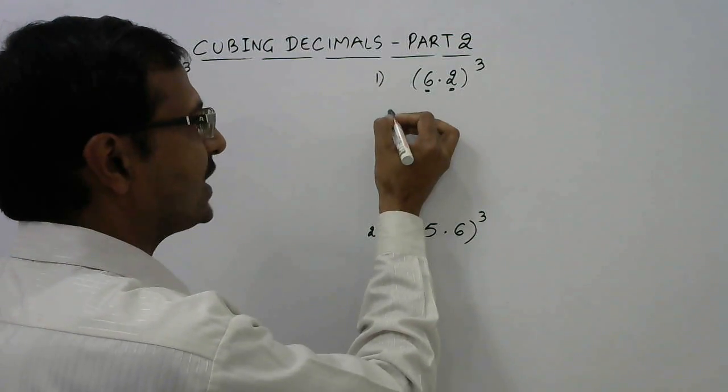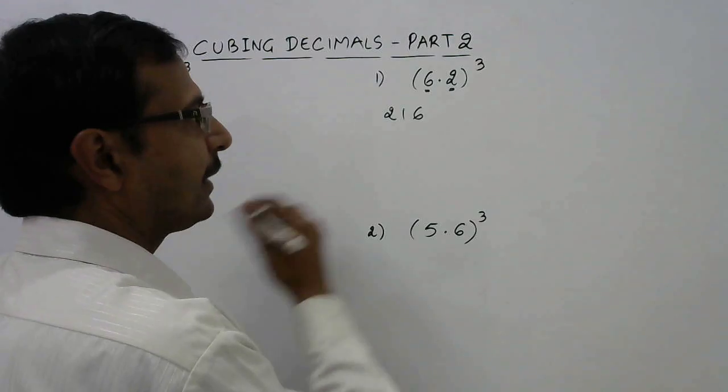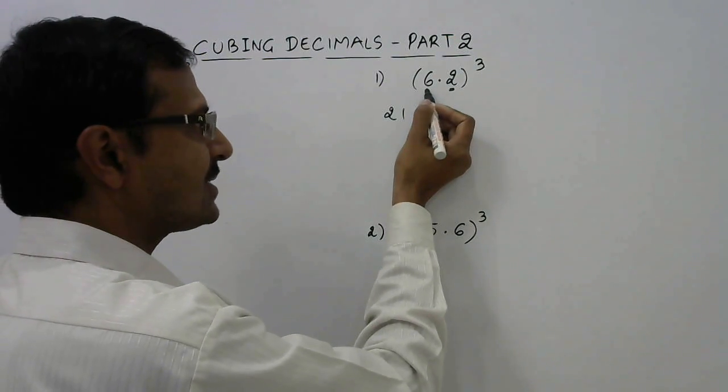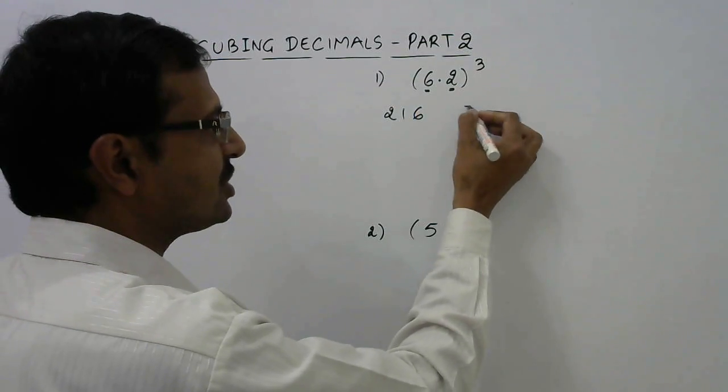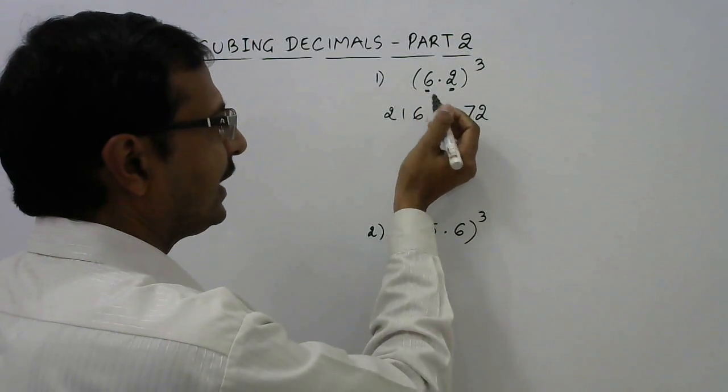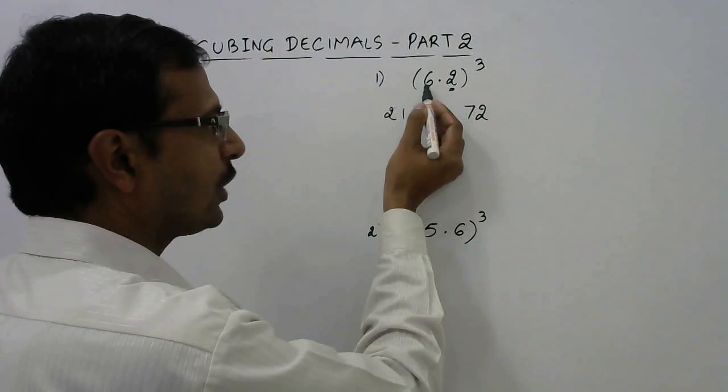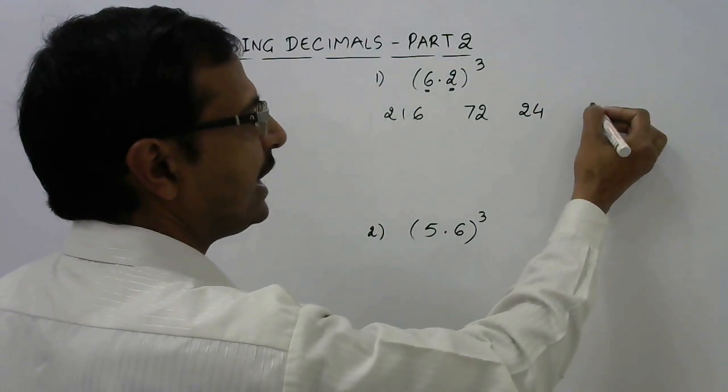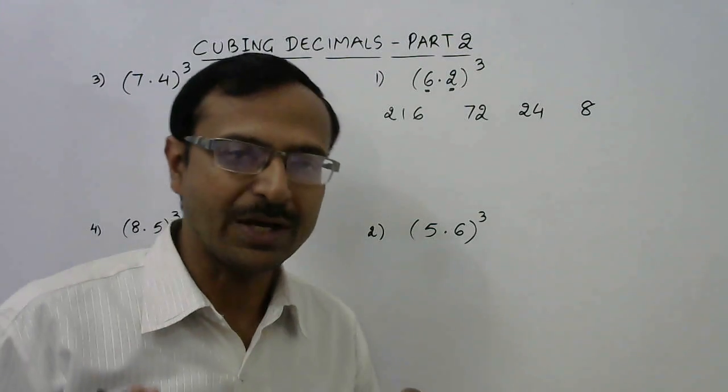Now you have to square this and multiply it by this. So 6 square is 36, 36 into 2 is 72. Then square this 4, 4 into 6, 24 and finally 2 cube, 8. So these are the four numbers you need to write for all questions. I will write it for all questions.